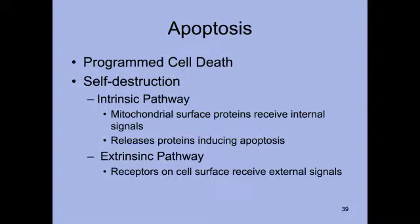Apoptosis can be signaled to a cell either intrinsically or extrinsically. If a cell recognizes it is no longer functioning properly, its mitochondria will receive protein signals and start releasing proteins that begin breaking down the cell. Other times, a cell may receive a signal from the outside — for example, from an immune cell because it is virus-infected. The receptors on the cell surface receive contact-dependent signaling from a natural killer cell or a cytotoxic T cell, telling the cell it must die.